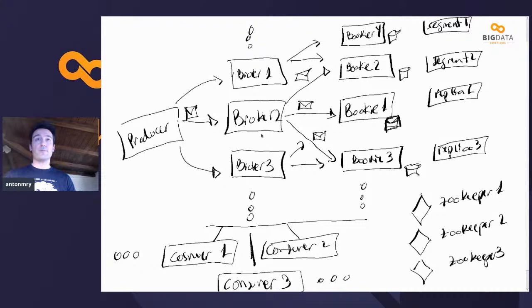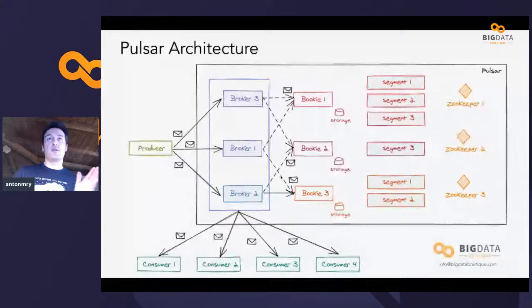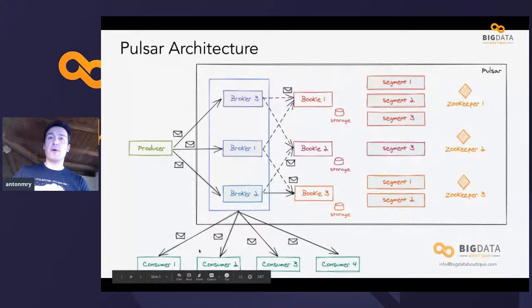To summarize the architecture comparison: Kafka has brokers with leaders and replicas and consumer groups, but scaling brokers and consumers is not easy. Pulsar adds a BookKeeper layer which allows easier scale-up and scale-down of brokers, and supports more advanced consumer patterns, making it easier to scale consumers and implement different consumption patterns.